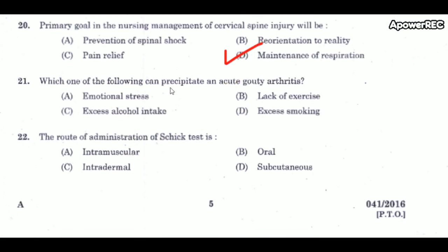Next question: which of the following can precipitate acute gouty arthritis? The correct answer is excess alcohol intake. Gout is a hereditary condition involving disturbed uric acid metabolism; excessive uric acid may cause renal insufficiency.